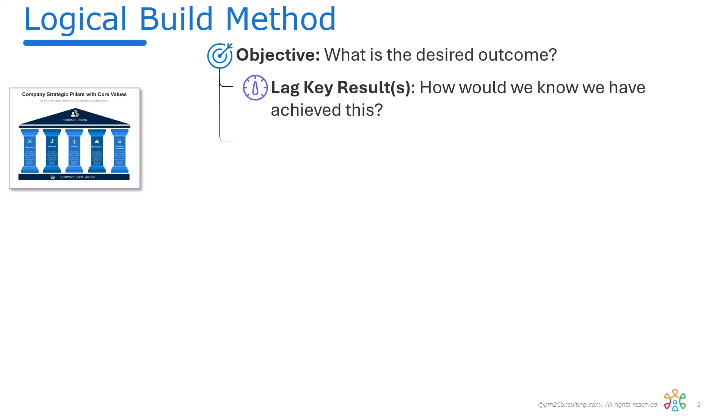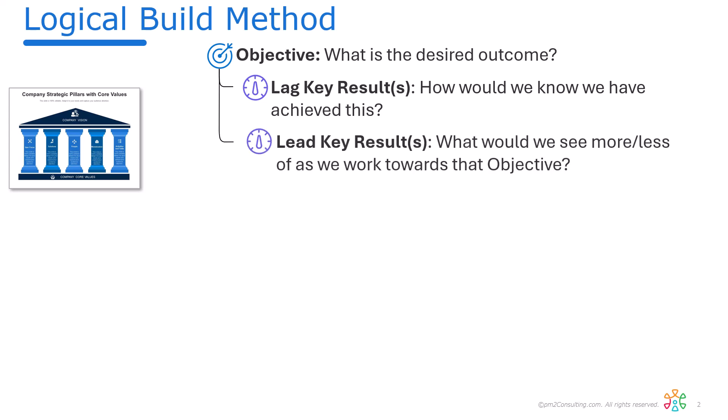Then we need to figure out, as a second step, what are the leading key results — what would you see more of or less of as you're working towards achieving that objective? That's a repeating structure.